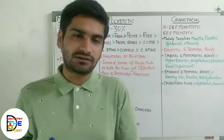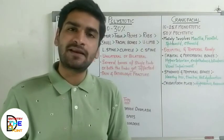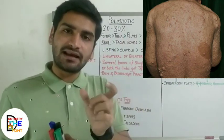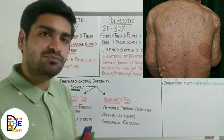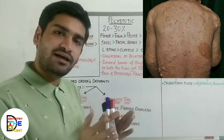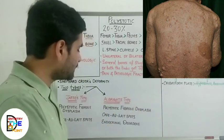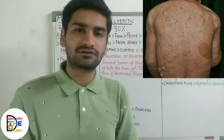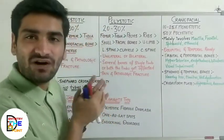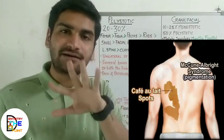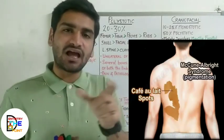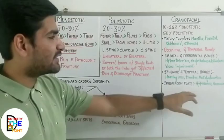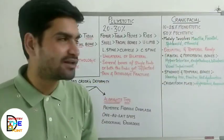The café-au-lait spots are also seen in neurofibromatosis, also known as von Recklinghausen's disease — this is a common MCQ question in competitive exams. The key difference is: café-au-lait spots in neurofibromatosis have smooth borders, while café-au-lait spots in fibrous dysplasia have irregular or jagged borders.